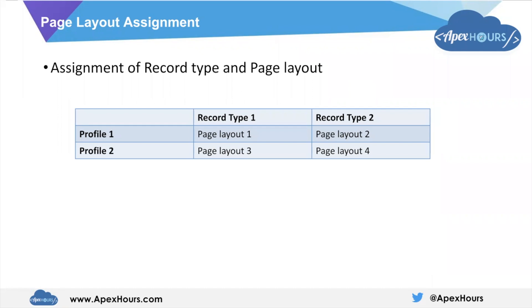How we can assign a record type and page layout: for every profile we can assign a different page layout for the same record type. So suppose we have one profile and two record types - profile one can have a different page layout for both record types. We can also have multiple profiles with a single record type, where both profiles can have the same or different page layouts.